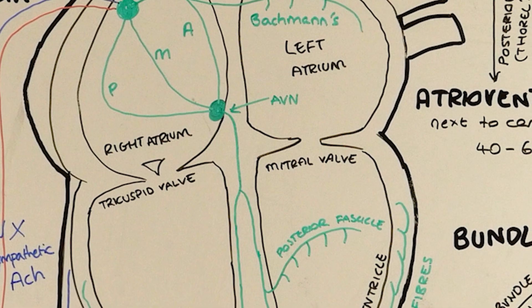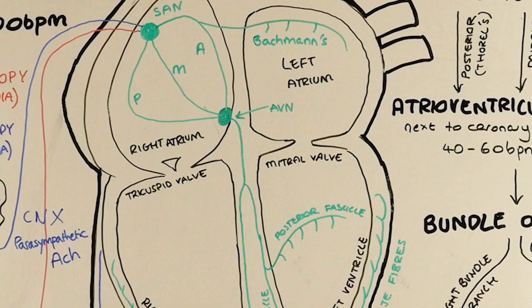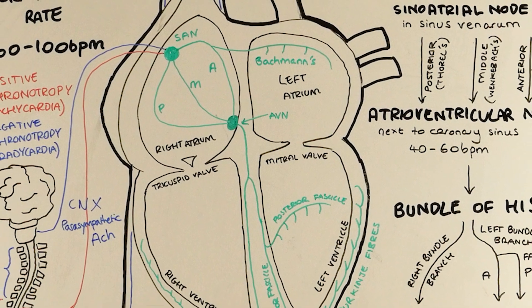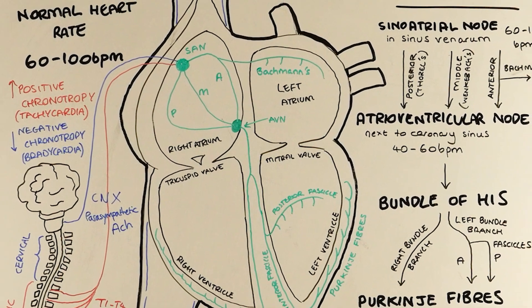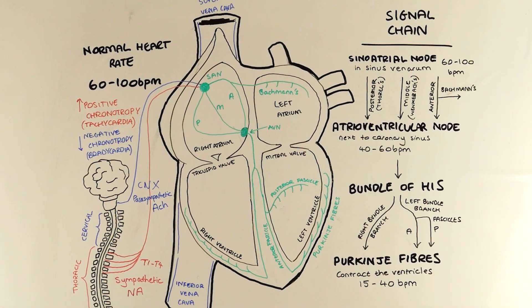The last thing to note here is that this entire conduction system is encased by a fibrous skeleton, which insulates it from the rest of the heart, and also separates the atria and the ventricles from each other, meaning the only pathway connecting them is via the atrioventricular node.